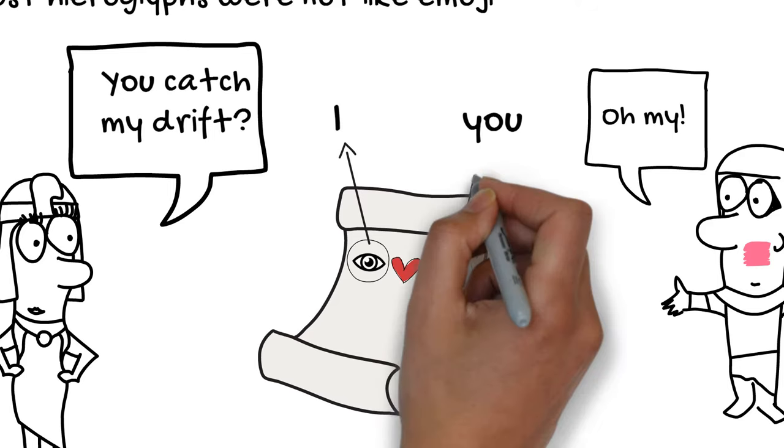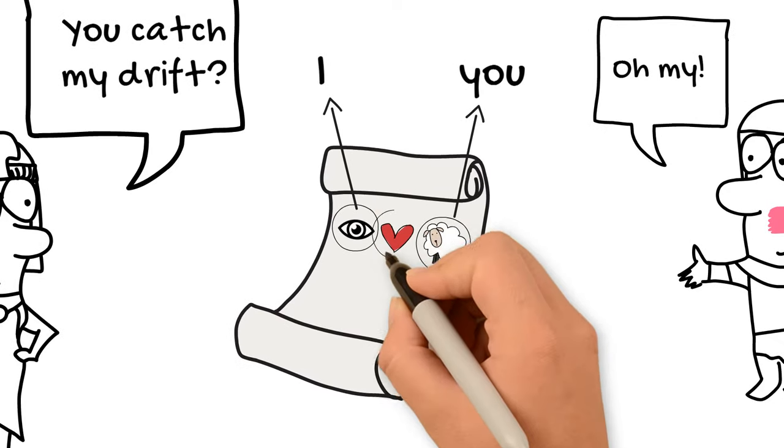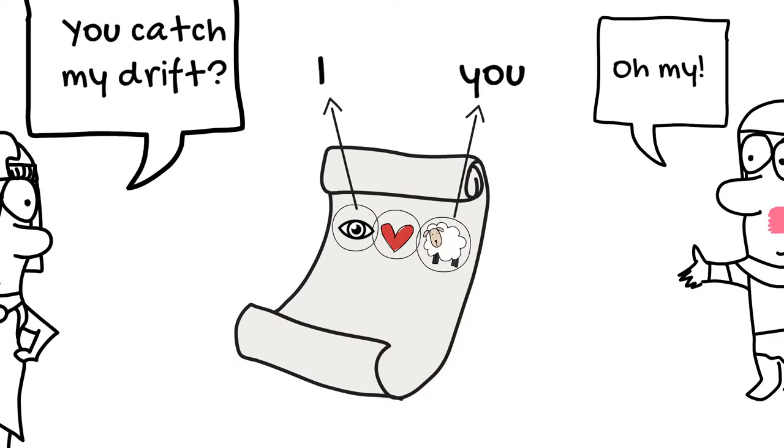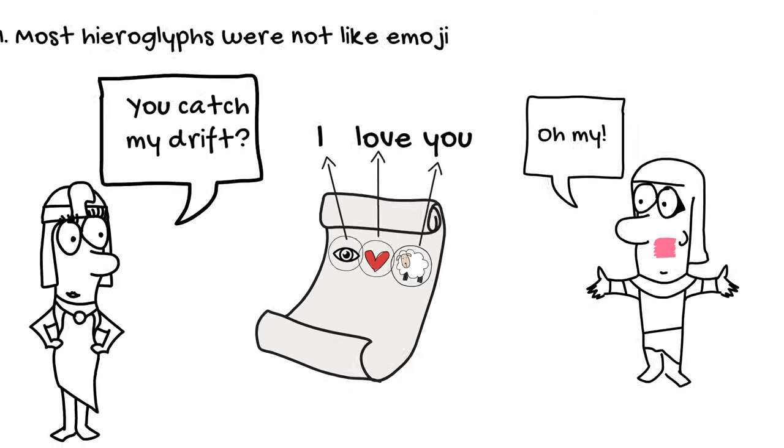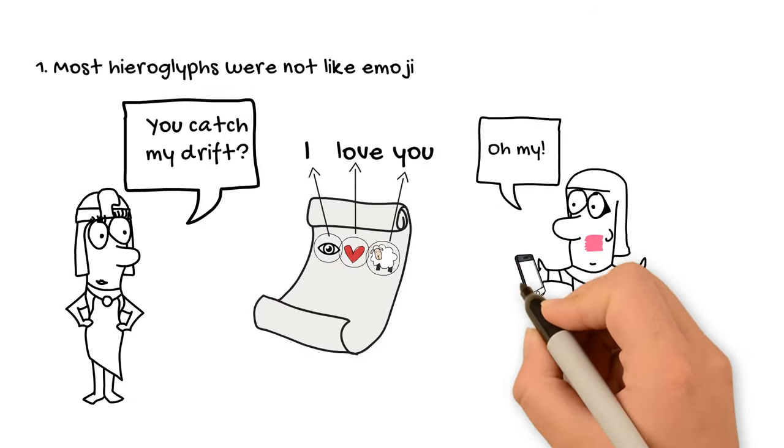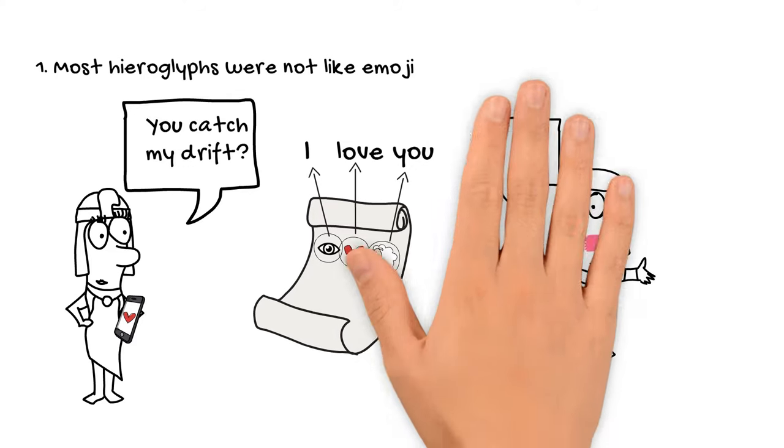Now, the I and the you, of course, are being used as what we call rebuses. That is, they stand for their sound rather than for the original meaning of the pictures. But the heart, on the other hand, is actually being used for a kind of extended meaning of the picture, right? The heart is standing in for the concept of love. We're not treating it as the sound's heart, but instead for the concept. And this is a little closer to how we actually use modern emoji, right? You might send a heart to somebody in a text message to let them know that you love them, but you're probably not going to send them an eyeball in a sheep, right?